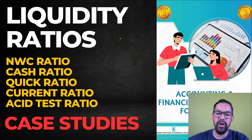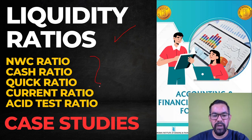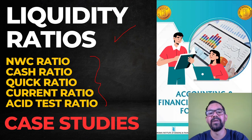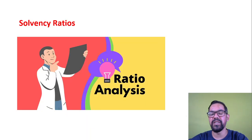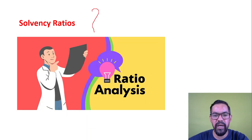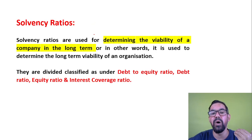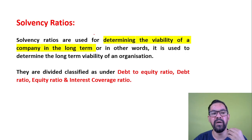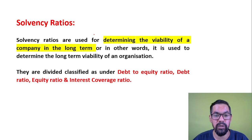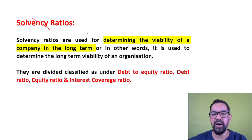Previously we discussed liquidity ratio — I hope you watched that video — where we discussed net working capital ratio, cash, quick and current ratios, asset-less ratio, and we solved some cases based on those ratios. Now it's time for solvency ratio. Solvency means the long-term viability of an organization — how any specific organization will deal with its long-term debt, and how they'll pay it in the long term. With the help of solvency ratio you can calculate these particular things.